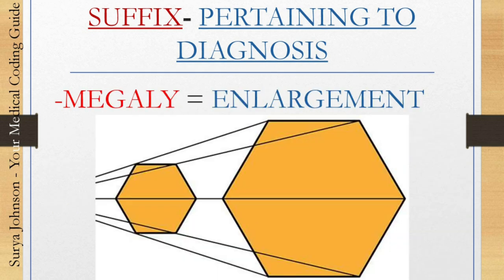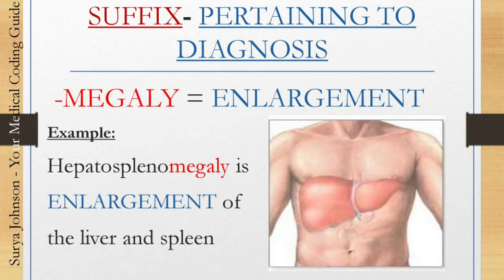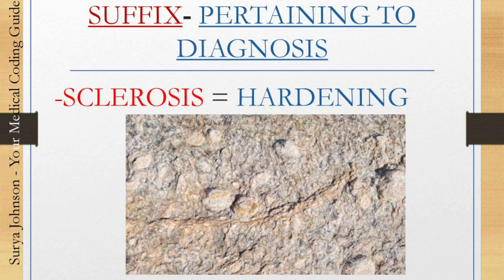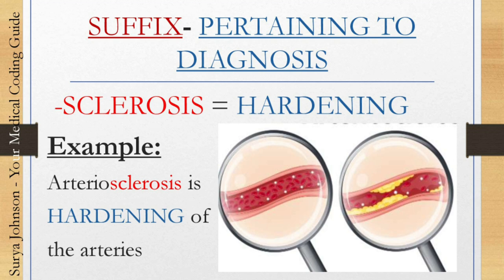'-Megaly' means enlargement. For example, hepatosplenomegaly means enlargement of the liver and spleen. You might wonder what 'hepatospleno' means — those are stem or root words which we will discuss in a future video. Once you've learned the root words along with the prefixes and suffixes, you can easily understand any medical terminology. The next suffix pertaining to diagnosis is '-sclerosis,' which means hardening. For example, arteriosclerosis is hardening of the arteries.